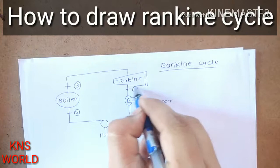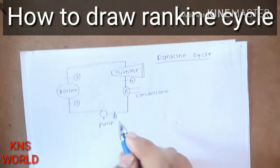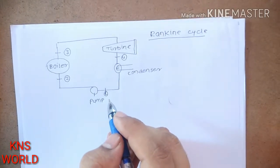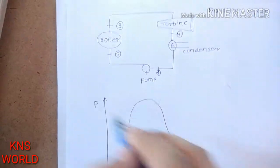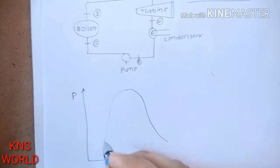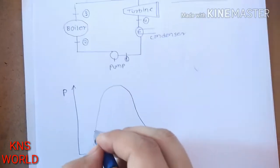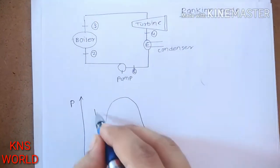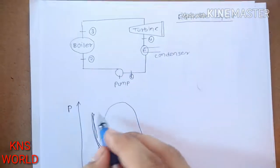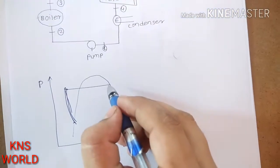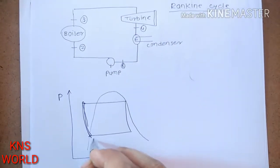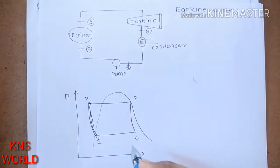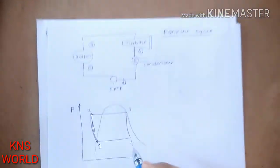We are now studying the PV diagram. The process starts here, goes toward the second point, then to the third, then to the fourth, and comes back to one. So the cycle is: one, two, three, four.